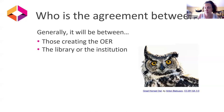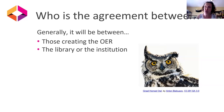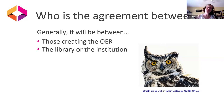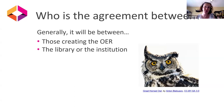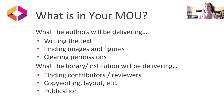Who is the agreement between? Generally for these programs, it is between the individuals creating the open educational materials and the library or the institution. That depends on a few things: who's going to hold the copyright, who is managing the program, and maybe who's funding the program. This is a little different for every institution, so this is one of the things you'll want to figure out.